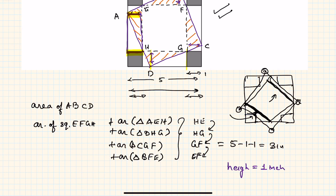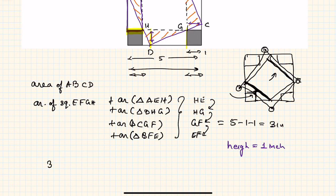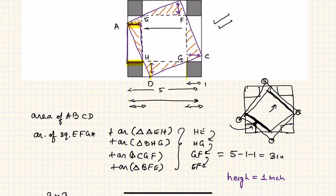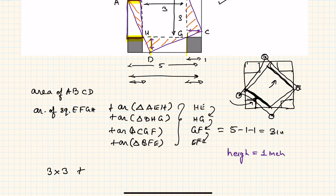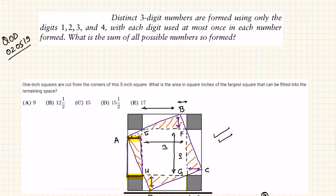Now we can find the area. The area of square EFGH is three squared, which is nine, because EF and FG are both three inches. The total area of all four triangles is four times one-half times base three times height one, which equals six. So nine plus six equals fifteen square inches. The answer to this problem is fifteen square inches — answer choice C.